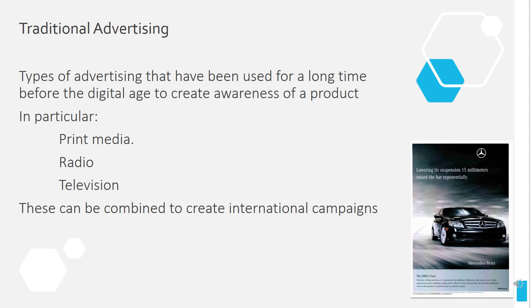Traditional advertising is quite straightforward — it simply means what has been going on for the longest time. The main forms are printed media such as posters, advertising in magazines, and newspaper adverts. Radio has been around a long time and adverts have traditionally been shown on radio. TV has been used for adverts since it first came around, though it's dying down a little because of video on demand. By running a cross-media campaign using all three of those methods to advertise one product, you are technically going above the line because you are addressing a mainstream audience.